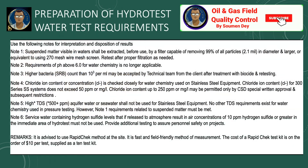Use the following notes for interpretation and disposition of results. Note 1: Suspended matter visible in water shall be extracted before use by a filter capable of removing 99% of particles 2.1 mm in diameter and larger, or equivalent. Note 2: The requirement of pH value above 6.0 for water chemistry is no longer applicable. Note 3: Higher bacteria SRB count than 10³ per milliliter may be accepted by the technical team from the client after treatment with biocide and retesting.